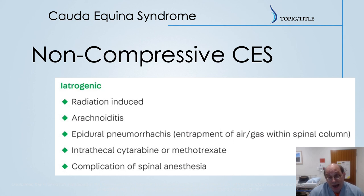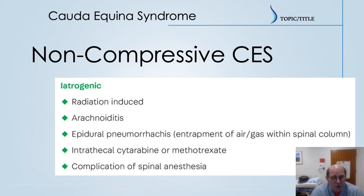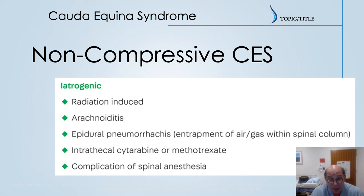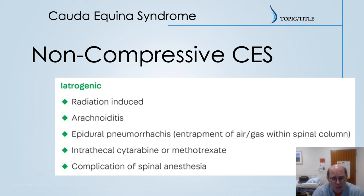Iatrogenic causes: if you've had cancer, radiation to that area can produce scarring and inflammation impacting the cauda equina. Arachnoiditis is a non-infectious cause where you get inflammation and scarring of the nerves within the cauda equina — this can happen after certain treatments, causing an inflammatory reaction. Medications such as cytarabine and methotrexate chemotherapy carry the risk of producing this inflammation and cauda equina syndrome. A complication of spinal anesthesia can also sometimes occur if something is injected differently than intended.